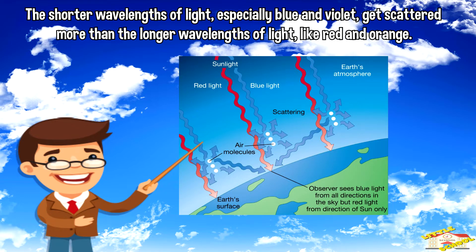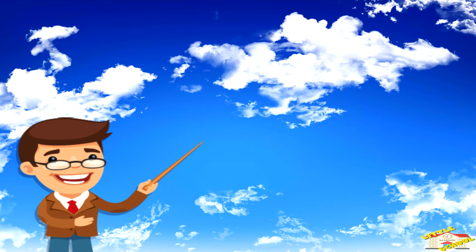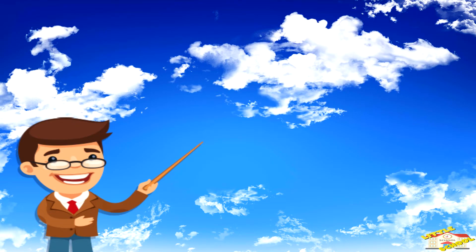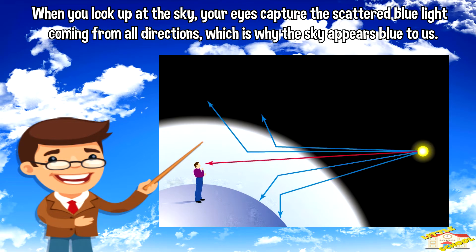Now this is where things get really interesting. The shorter wavelengths of light, especially blue and violet, get scattered more than the longer wavelengths of light like red and orange. Because blue light waves are shorter, they bounce around and scatter in all directions, filling the entire sky with a beautiful blue color.